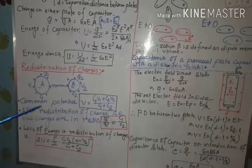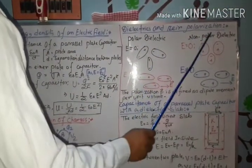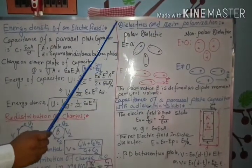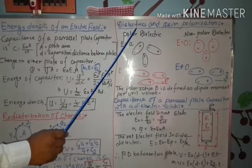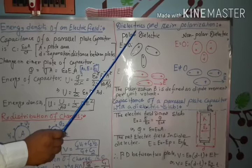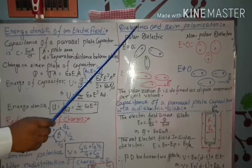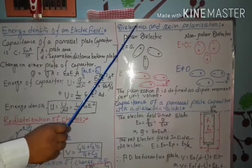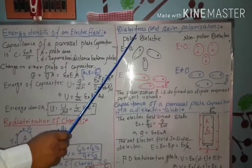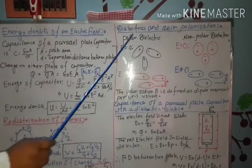After this, we have to know about the dielectric and their polarization. Dielectric means this is the type of material which does not allow the flow of charge through them. So normally you can say the dielectrics are the insulators. Examples are paper, glass, and wood.